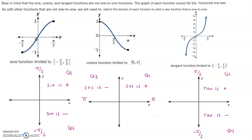So depending upon the information that we're given, either the function value that we're working with is going to be something that is positive or the function value is going to be something that is negative, and that's going to help us to identify which of the quadrants we want to go ahead and draw our triangle in.